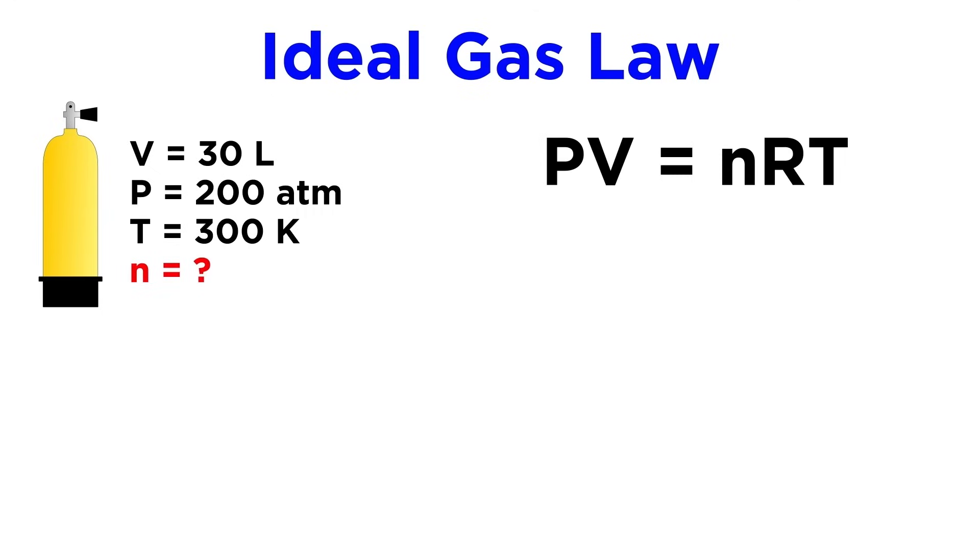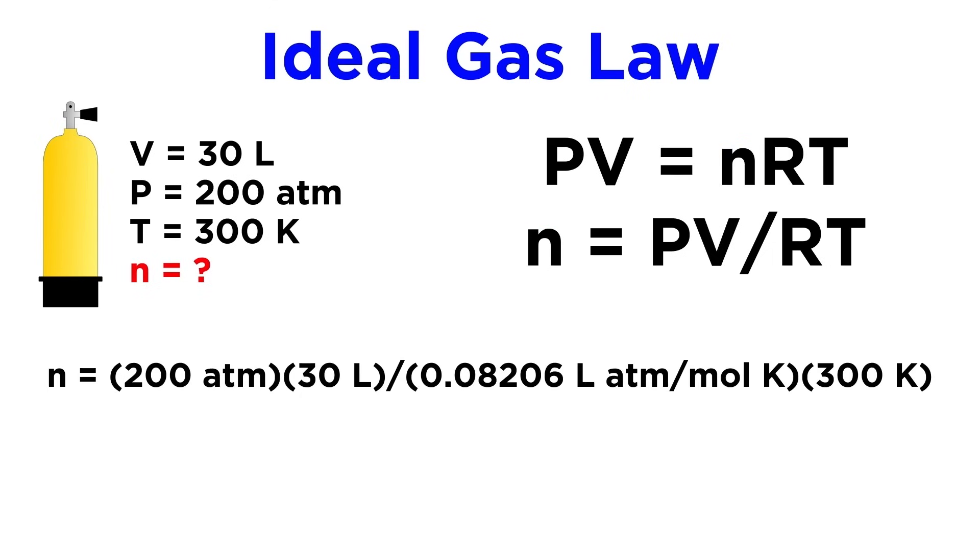Here we already have everything in the units we want, so let's solve the ideal gas law for moles, since that's what we need, and then plug everything in. Then cancelling out the units and doing the arithmetic, we get 244 moles of gas.